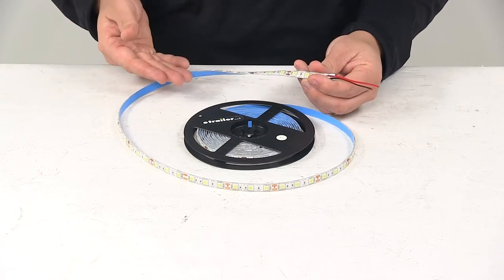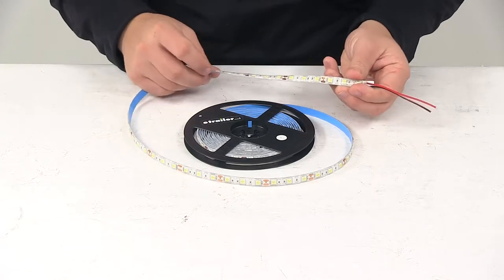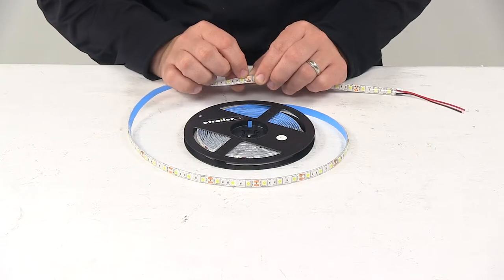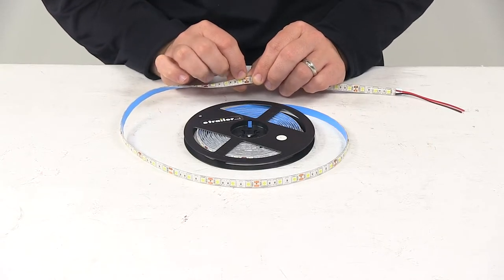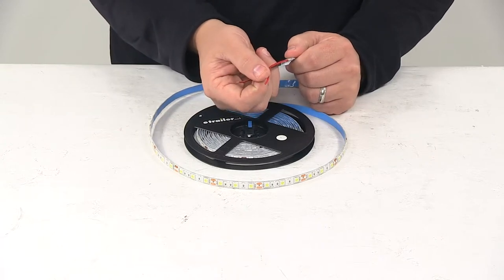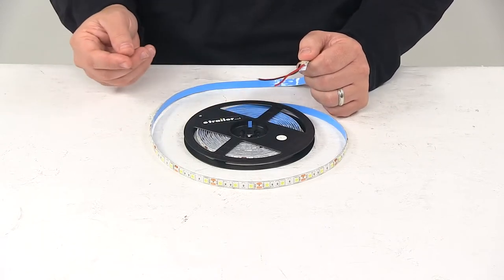You can cut this to the desired length located along the actual strip. There's an image of a pair of scissors indicating a cut mark. And then it hardwires to any 12 volt power source with the two wire pigtail. Red is your power wire, black is your ground wire.